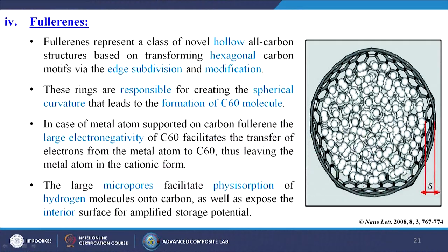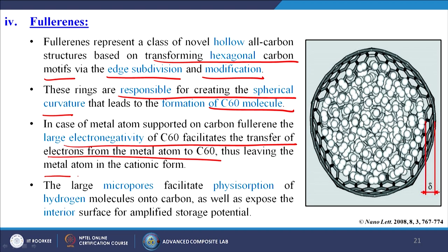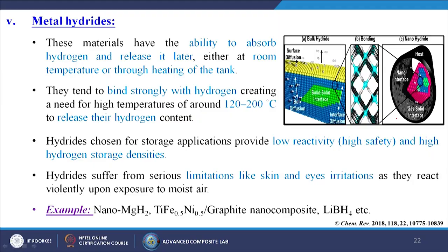Next is fullerene. Fullerenes represent a class of noble hollow all-carbon structures based on transforming hexagonal carbon motifs via edge subdivisions and modifications. These rings are responsible for creating the spherical curvature that leads to the formation of the C60 molecule — sometimes fullerene is known as the C60 molecule. In the case of metal atoms supported on carbon fullerene, the large electronegativity of C60 facilitates the transfer of electrons from the metal atom to C60, leaving the metal atom in cationic form. The large micropores facilitate the physisorption of hydrogen molecules onto the carbon and expose the interior surface for amplified storage potential. In between the gaps, hydrogen atoms are basically captured.